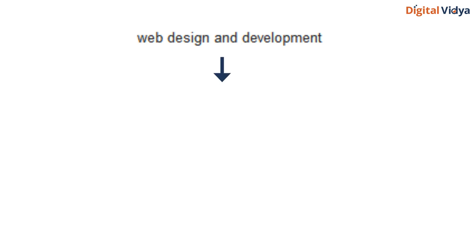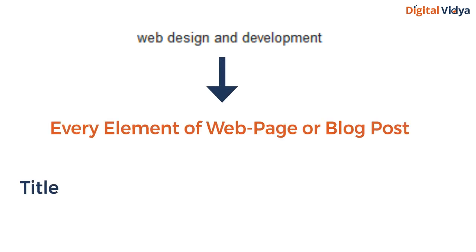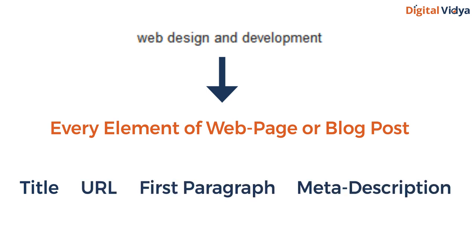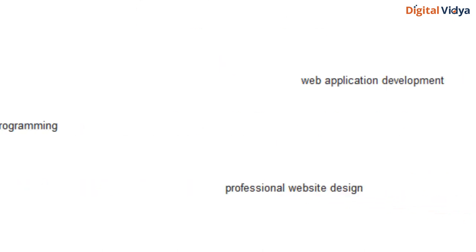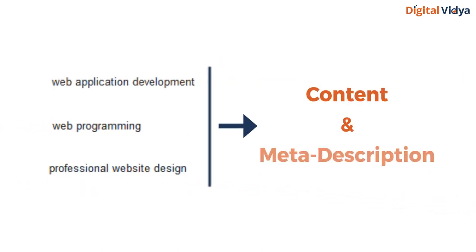It is necessary to include the focus keyword in every element of your webpage or blog post — that is the title, URL, first paragraph of the content, and the meta description. You also have to include the rest of the shortlisted keywords in the content and meta description.